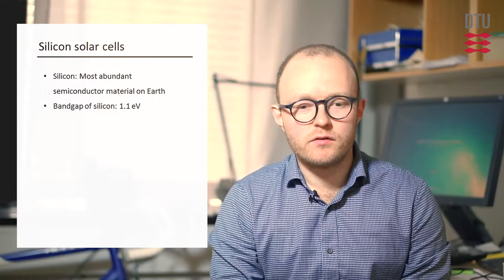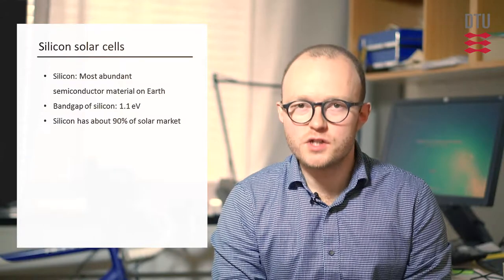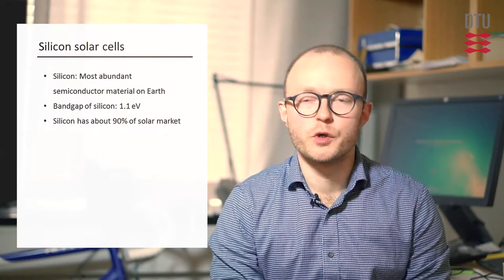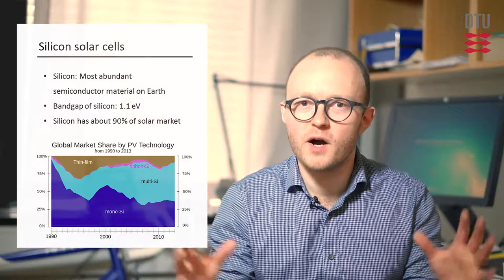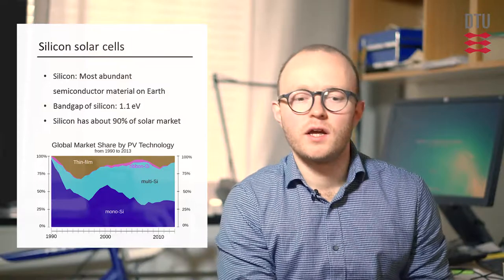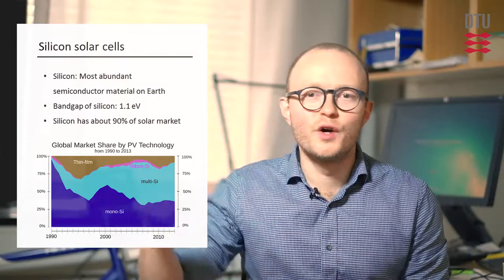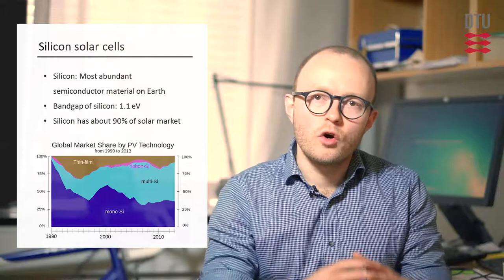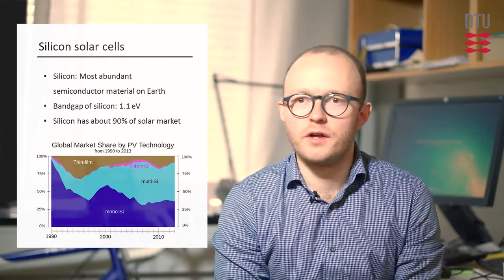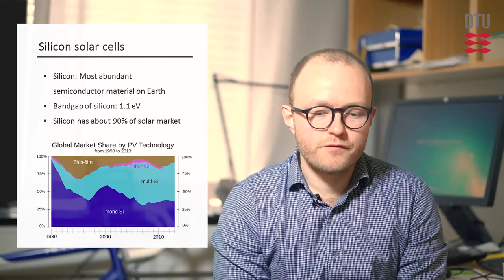At the moment, silicon is the dominant material in the solar market. It's about 90 percent of the market share that's either mono or multi-crystalline silicon, and it's actually been that way with a few changes in the exact percentage. But overall, silicon has dominated the solar industry from the beginning, the primary reason being that silicon is an abundant semiconductor material that we're able to mass produce wafers and cells from at low cost and high quality.